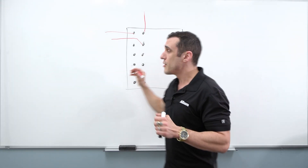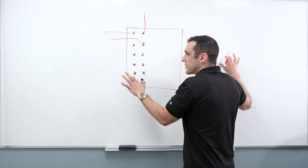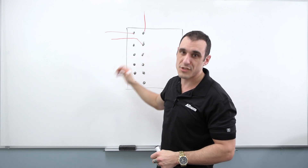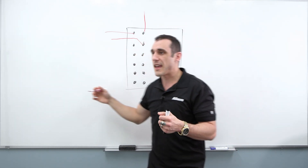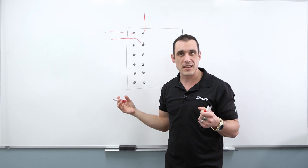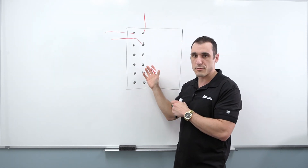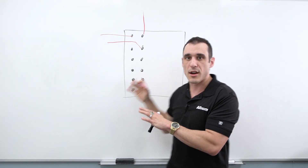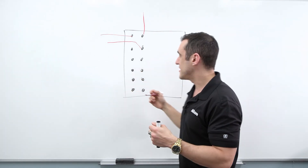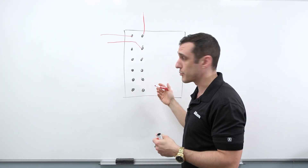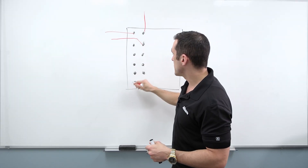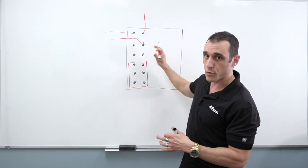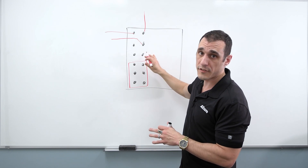So first things first, when you're floor planning your design around this and figuring out where you're going to route each of these different pins, just look at where the interfaces are. That's really the first step. And that might sound kind of obvious, but if you've never actually designed with one of these components, there's a lot going on in one of these footprints, and it can be kind of confusing and difficult to try and figure out where exactly you're going to route everything.